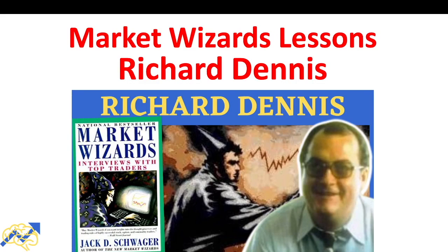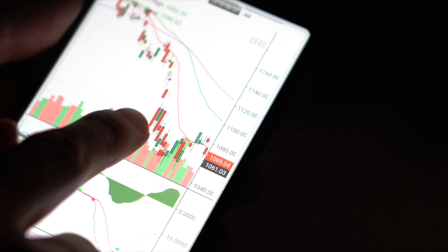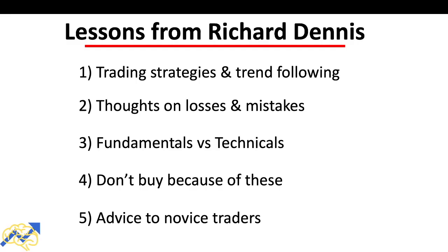Welcome back to the Market Results Lessons playlist. In this episode, we'll be taking a look at Richard Dennis's total trading strategy — how he turned $400 into around $200 million dollars, and some of the strategies he taught in his turtle trading program. The five lessons are: trading strategies and trend following, thoughts on losses and mistakes, fundamentals and technicals, don't buy because of these things, and advice to novice traders.